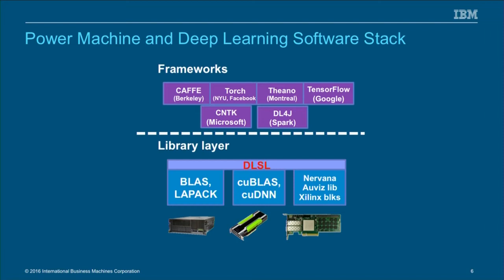You will start seeing very compelling performance numbers with large amounts of GPUs available. In terms of the library layer, there's cuBLAS and cuDNN available. We are also working with Nirvana, which is an FPGA-based vendor for training and inferencing working with Xilinx, and Xilinx blocks will be supported through software libraries. Internally at IBM, we are also working on what we call DLSL — a deep learning system-level library — that will exploit NVLink for several of these applications and will be released as open source.